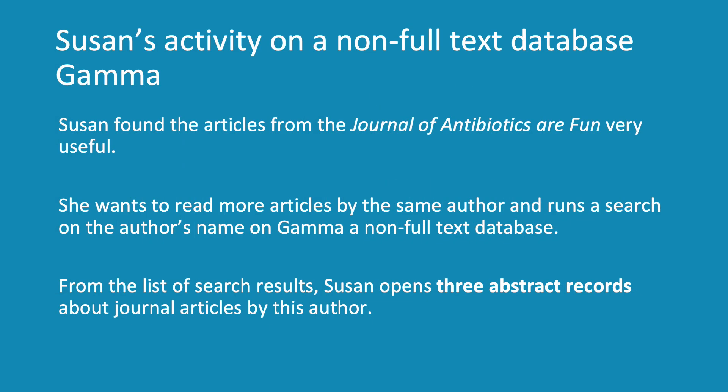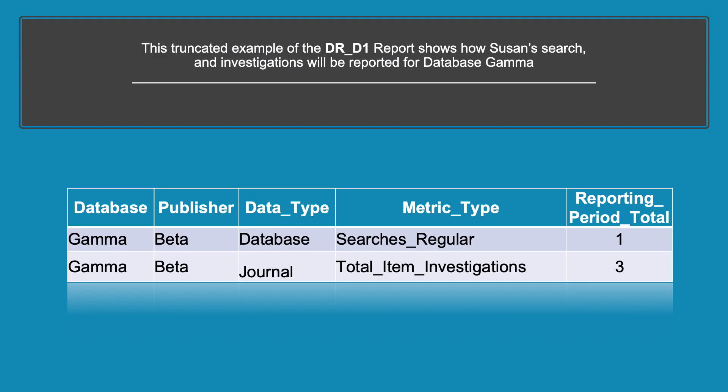Now we will look at Susan's activity on a non-full-text database, Gamma. She found the articles from the Journal of Antibiotics of Fun very useful and wants to read more articles by the same author. Susan therefore runs a search on the author's name on Gamma. From the list of search results, she opens three abstract records about journal articles from this author. This truncated example of the DR-D1 report shows how Susan's search and investigations will be reported for database Gamma: searches regular 1, and total item investigations 3.